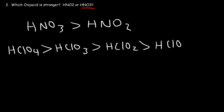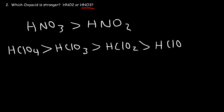HCl doesn't fit this trend. In fact, HCl is stronger than HClO, HClO2, and HClO3. You can't put HCl in this trend — it doesn't have an oxygen and is not considered to be an oxyacid. But for other oxyacids like HClO4, this is a stronger acid than HClO3. The trend works for oxyacids only, those that contain oxygen.